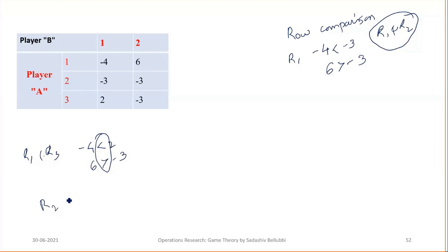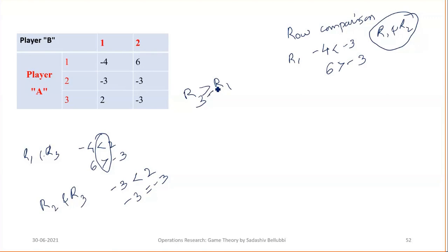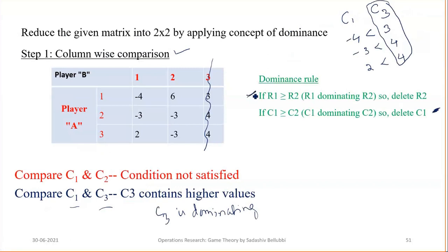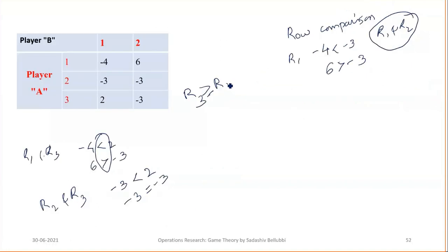Comparing R2 and R3: minus 3 is less than 2, and minus 3 equals minus 3. All values of R3 are greater than or equal to R2, so R3 is dominating R2. Since R2 is the least row, we delete R2. We now have a reduced 2 by 2 payoff matrix.